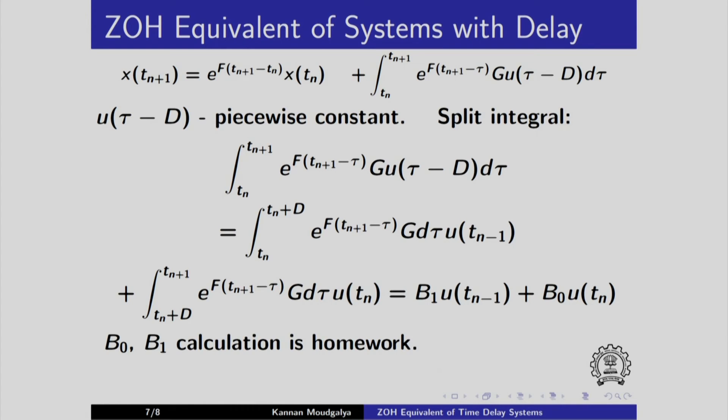What are b0, b1? Can we simplify it? This has to be done as a homework.